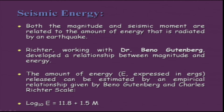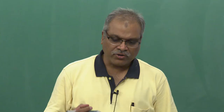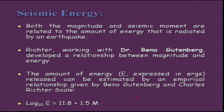Some people argue that continuously occurring small or moderate magnitude earthquakes in the Himalayas or seismically active regions mean energy is continuously being released. But if you compare the energy released during a magnitude-8 earthquake with that of magnitude-3 events, you will understand how many magnitude-3 earthquakes would be required to equal the energy of a single magnitude-8 event.